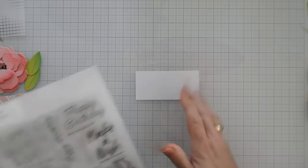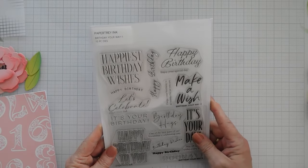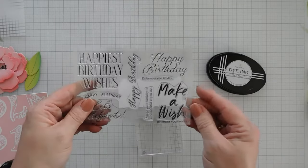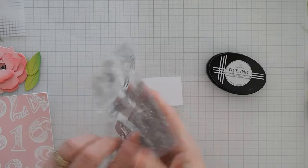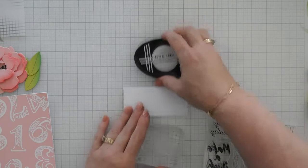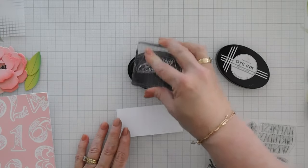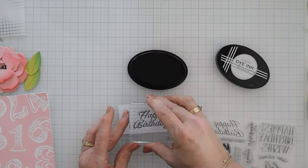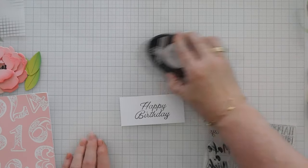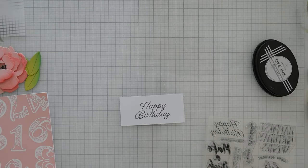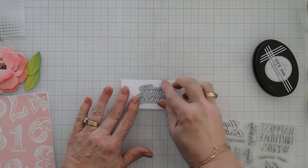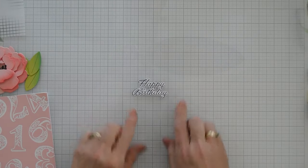And now we need a happy birthday greeting. So I'm using the paper tray birthday your way stamp set. I'm going to take happy birthday, and we're going to stamp this with more true black ink. And then I'm going to take the coordinating die, and we will die cut this out. And that's our happy birthday greeting.